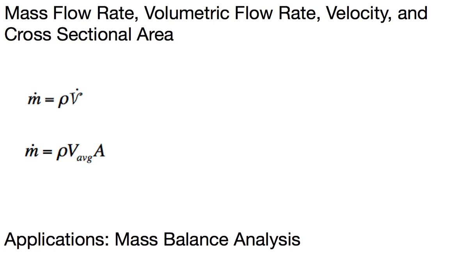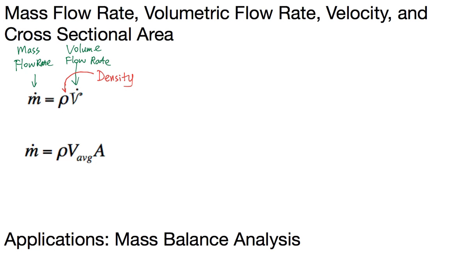We see two equations here. Mass flow rate, m-dot, is equal to density times velocity times volumetric flow rate — V-dot — that's the volumetric flow rate. And this quantity rho, this symbol rho, that's the density of the fluid. We will also show that the volumetric flow rate is equal to the average velocity at a cross-section in the control volume multiplied by the cross-sectional area.